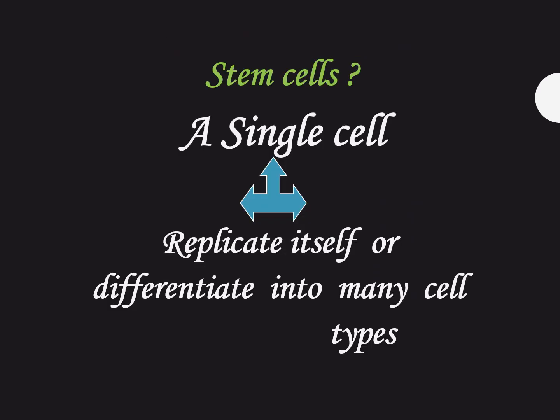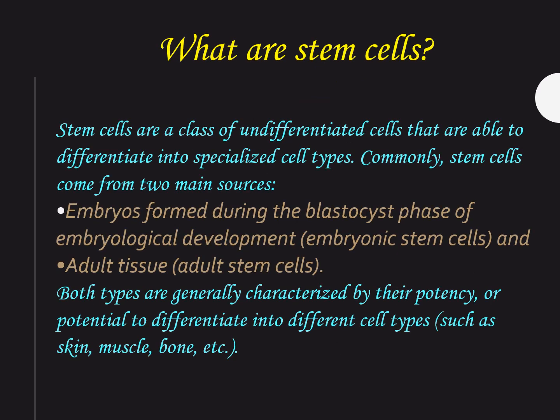With this research result, scientists were able to describe stem cells as a single cell that has the ability to replicate itself and also to differentiate into many cell types. Generally speaking, we can define stem cells as a class of undifferentiated cells that are able to differentiate into specialized cell types. Commonly, these cells are derived from two main sources: embryos and adult tissue.